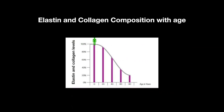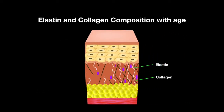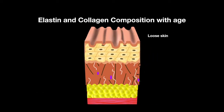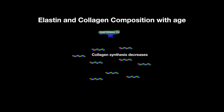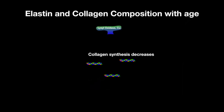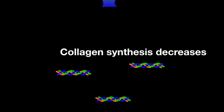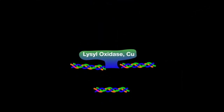The amount of elastin and collagen changes in an individual when they age. Both collagen and elastin levels decrease after the age of 20, making the skin more loose and more fragile. The synthesis of collagen fibrils decreases; however, the cross-linking between them remains normal.